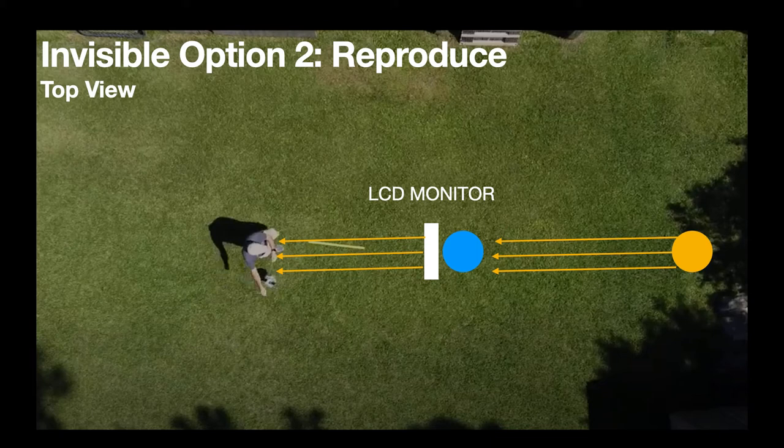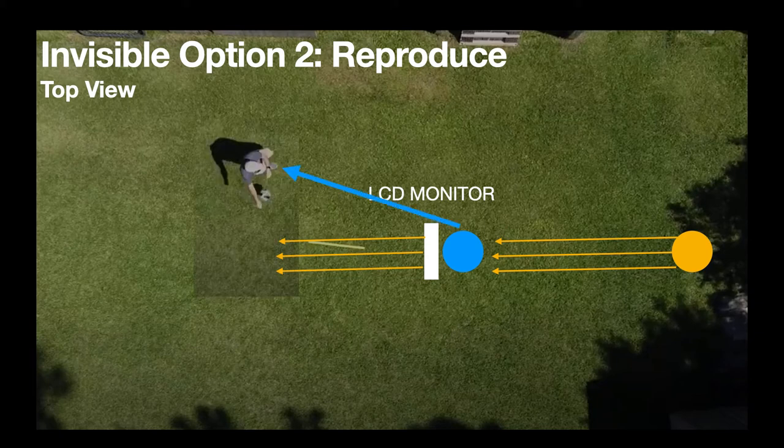Of course you have to have this set up and you have to be in the right position. Because if I move right here, then I can actually see light coming off the hidden object. So the monitor has to be in just the right place for just the right observer. So that's not great.